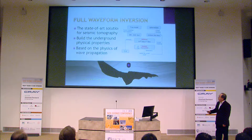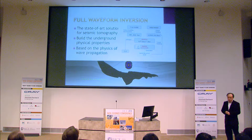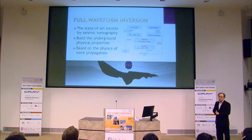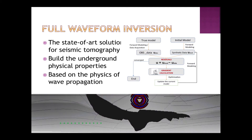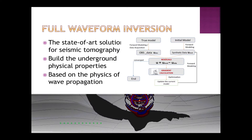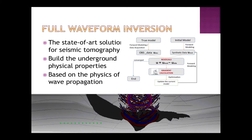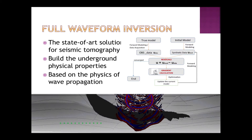What we are focusing on recently is full waveform inversion. This is the state-of-the-art solution for seismic imaging, and it tries to recover the physics properties underground. You have a source and wave propagation computed based on the wave equation, then you do inversion by calculating the misfit between observed data and synthetic data, and iteratively update the velocity model to make it more and more accurate.